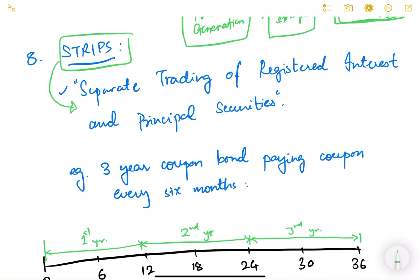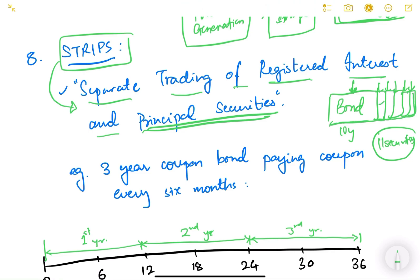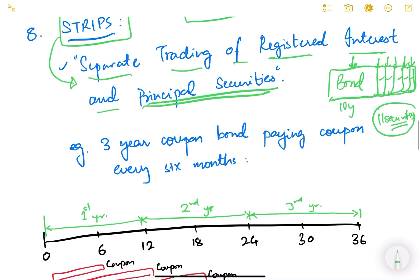The eighth type is STRIPS. The full form of STRIPS is Separate Trading of Registered Interest and Principal Securities. Basically, if there is a 10-year bond, it has 10 coupons. What the government does is strip — or break — this bond. It breaks the bond into 11 securities: 10 coupon payments and one principal payment. Instead of one bond with 10 coupons, it is converted into 11 separate bonds. This process is known as the stripping process.